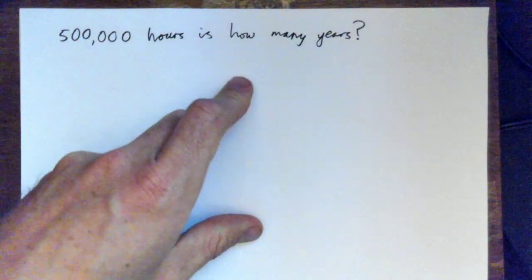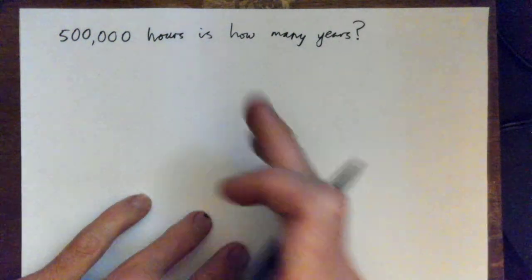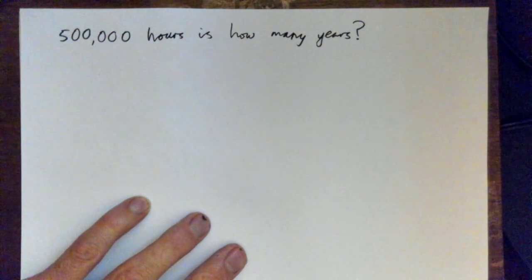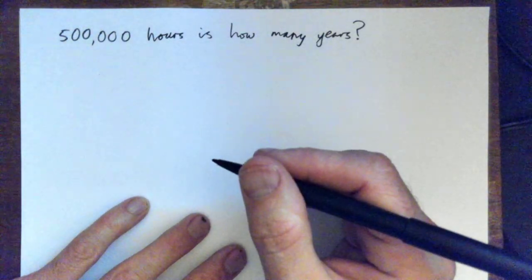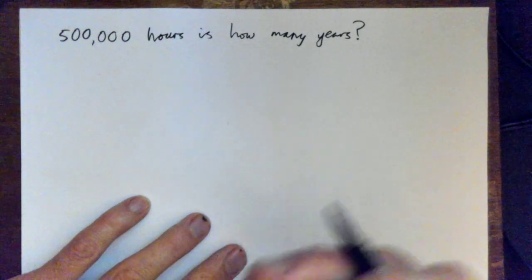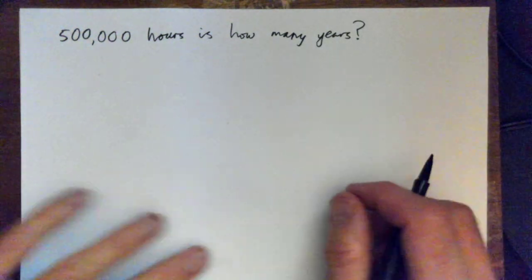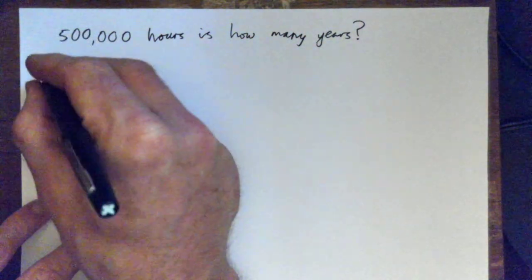Alright, so we got 500,000 hours is how many years? So we got to go from hours to years. Let's get some facts going here. If you think about units of time, we got hours, days, weeks, that type of thing. If we want to go from hours to years, we probably want to do something like...